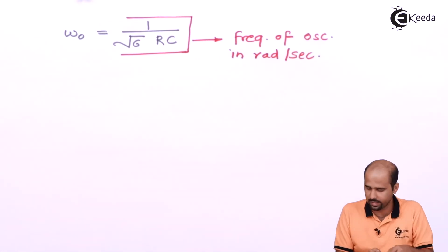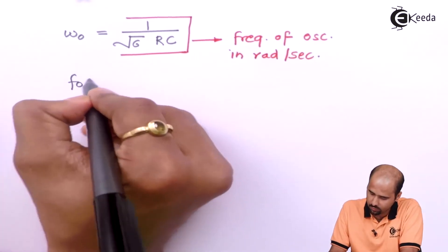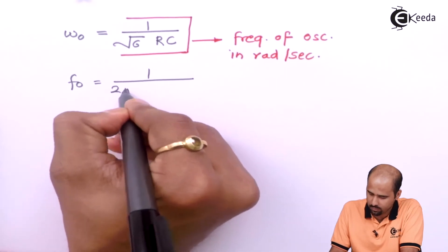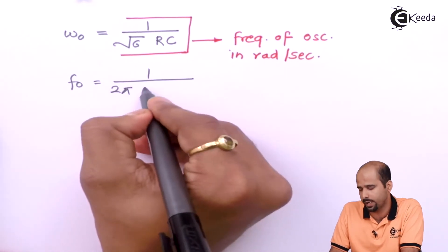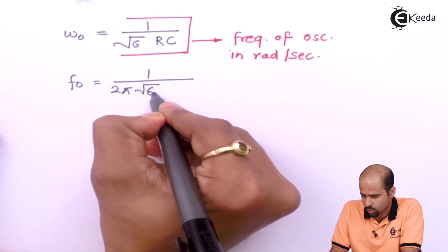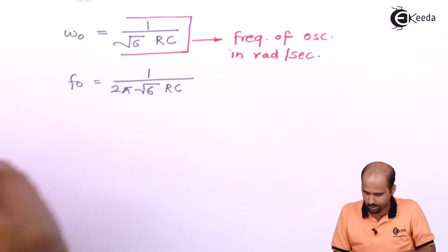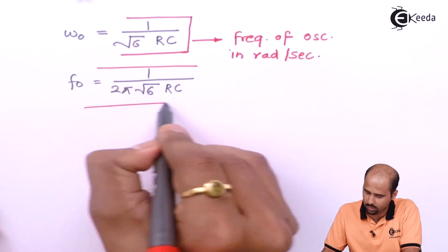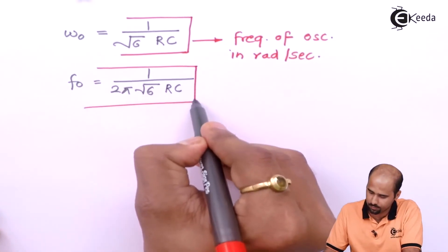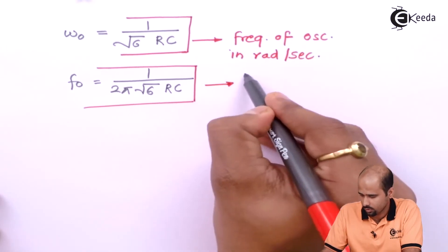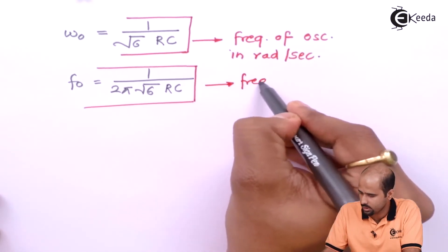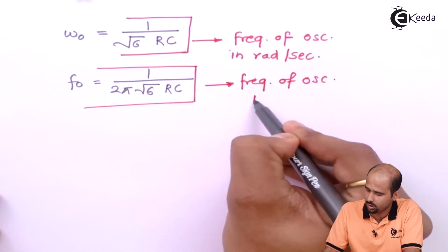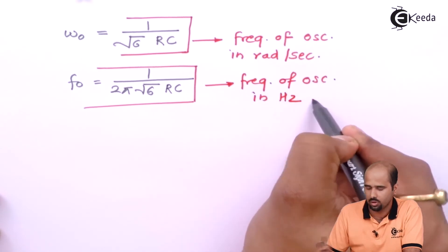We will also get the frequency of oscillation in hertz. Just multiply by 2π and take the inverse, giving f₀ = 1 / (2π × √6 × RC). This is your frequency of oscillation in hertz.